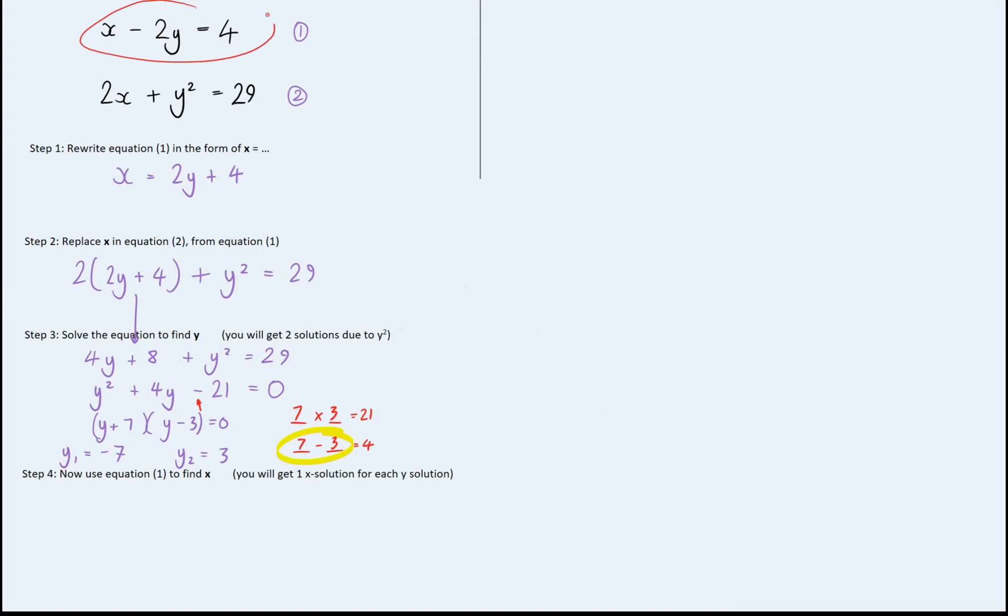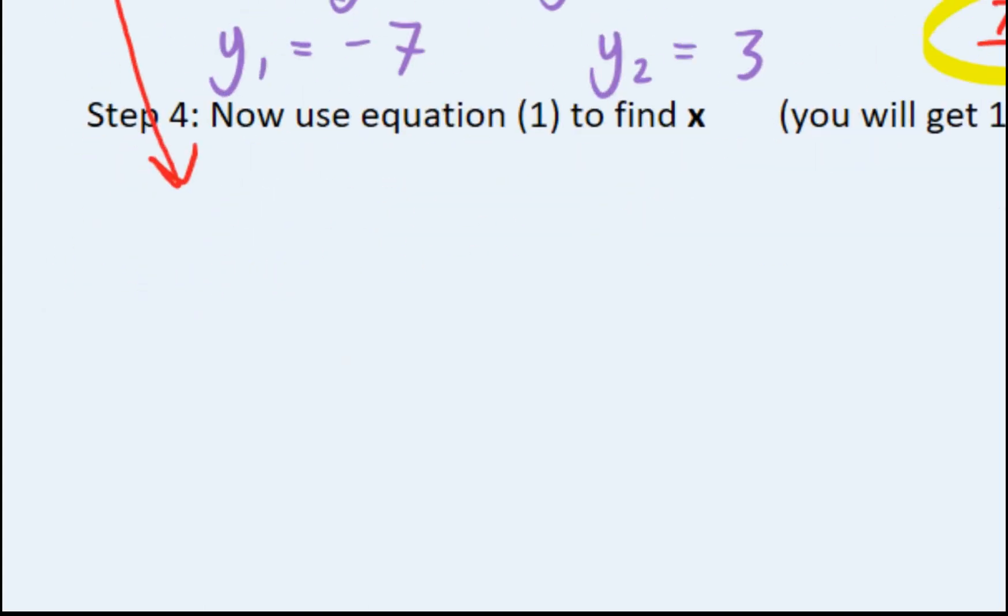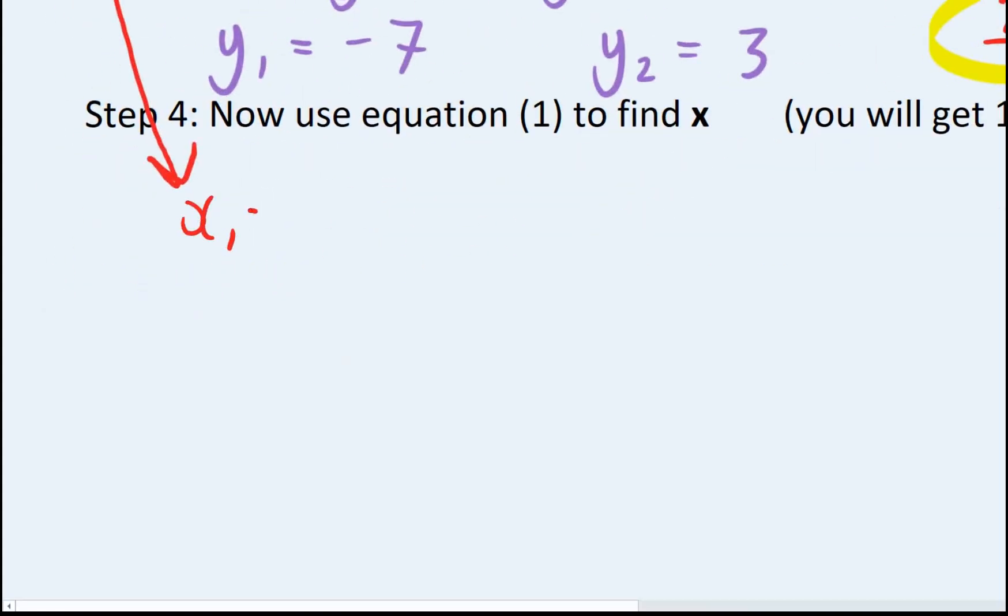Again, I can use equation 1, but it's slightly easier to just use the rearranged formula instead, although both of them will work. So x equals 2y plus 4. That means x1 will equal 2 lots of y1 plus 4. And the same thing with x2 and y2. And now we just plug them in.